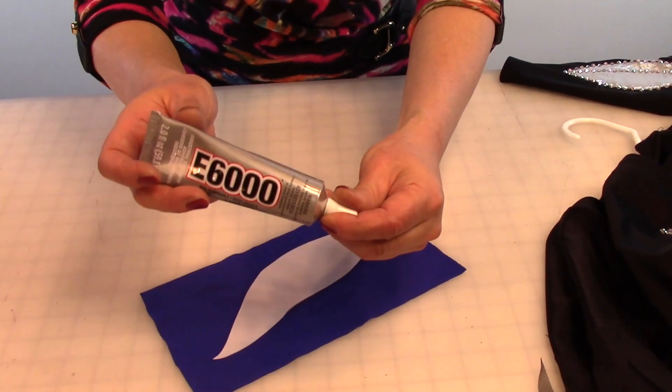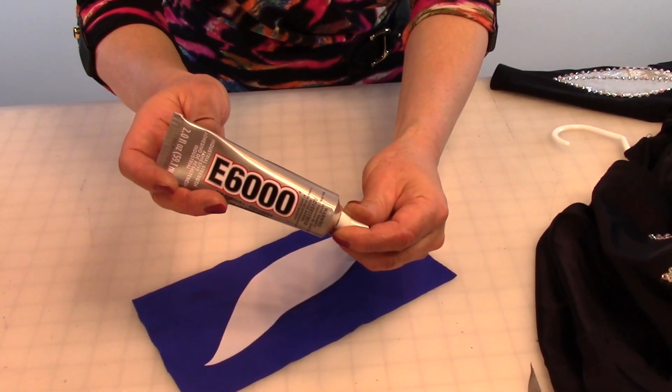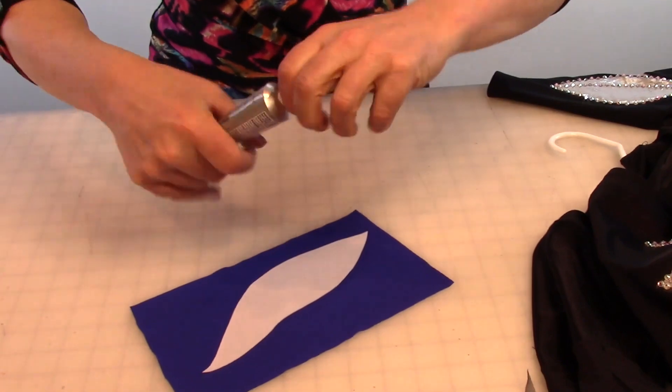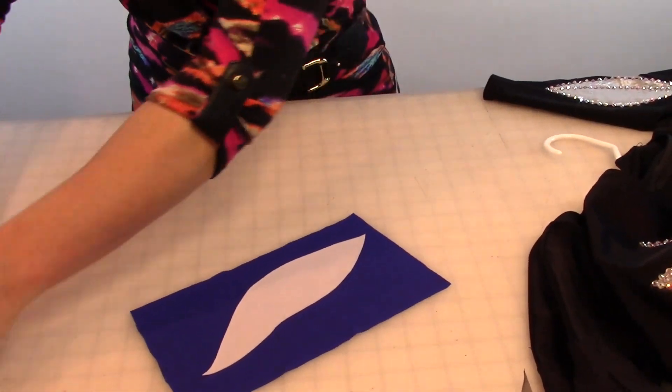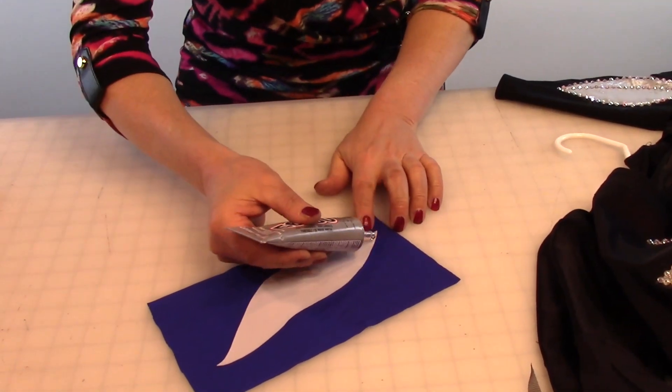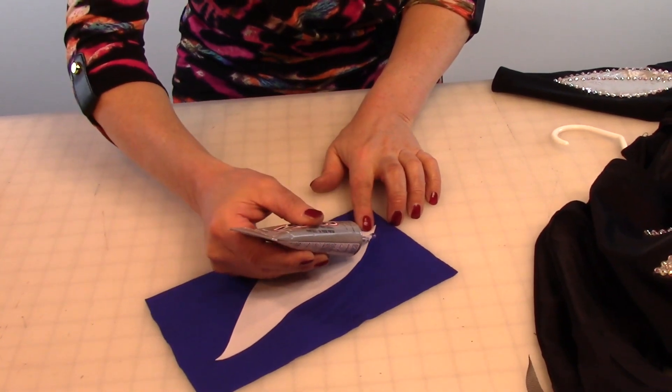The next thing I do is just use some E6000 and we're just going to open that up. And I put little dots all the way along.